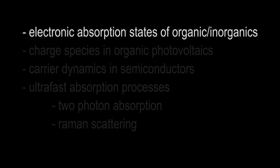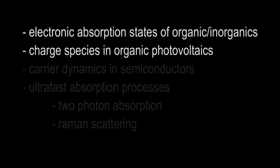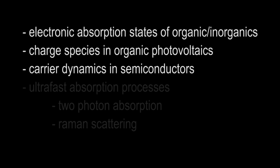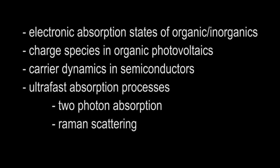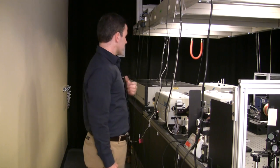It sounds like a niche spectroscopy tool, but we can actually do measurements on a bunch of different systems. People look at things as different as the electronic absorption states of organics, charge species in organic photovoltaics, carrier dynamics in semiconductors, or ultra-fast processes like two-photon absorption or Raman. Because of this, the technique has become pretty ubiquitous — so much so that these systems are no longer just developed in individual laboratories but are commercially sold.